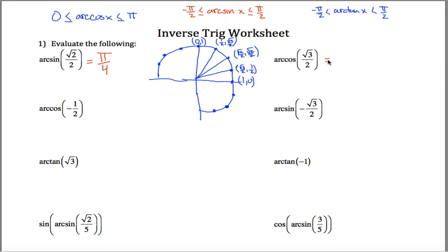Arc cosine of root 3 over 2. Same basic logic — I want the x coordinate to be root 3 over 2. That happens right here, and also in other places, right here for example. But I need it to be between 0 and pi, so I'm talking about this point right here. My answer is pi over 6.